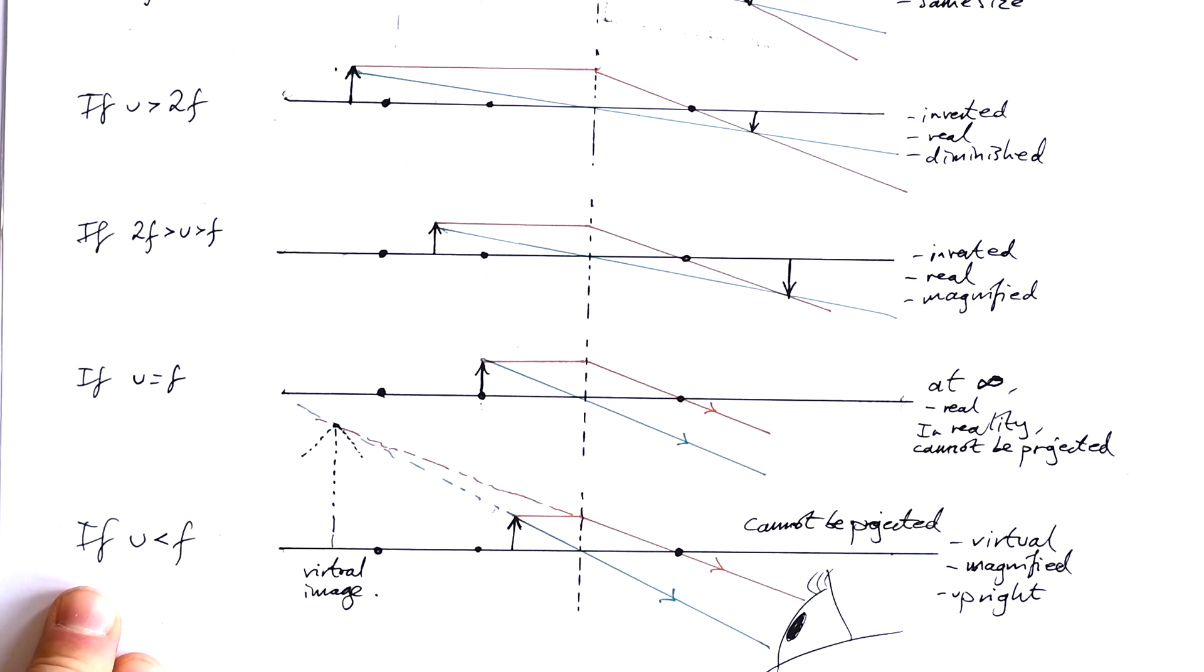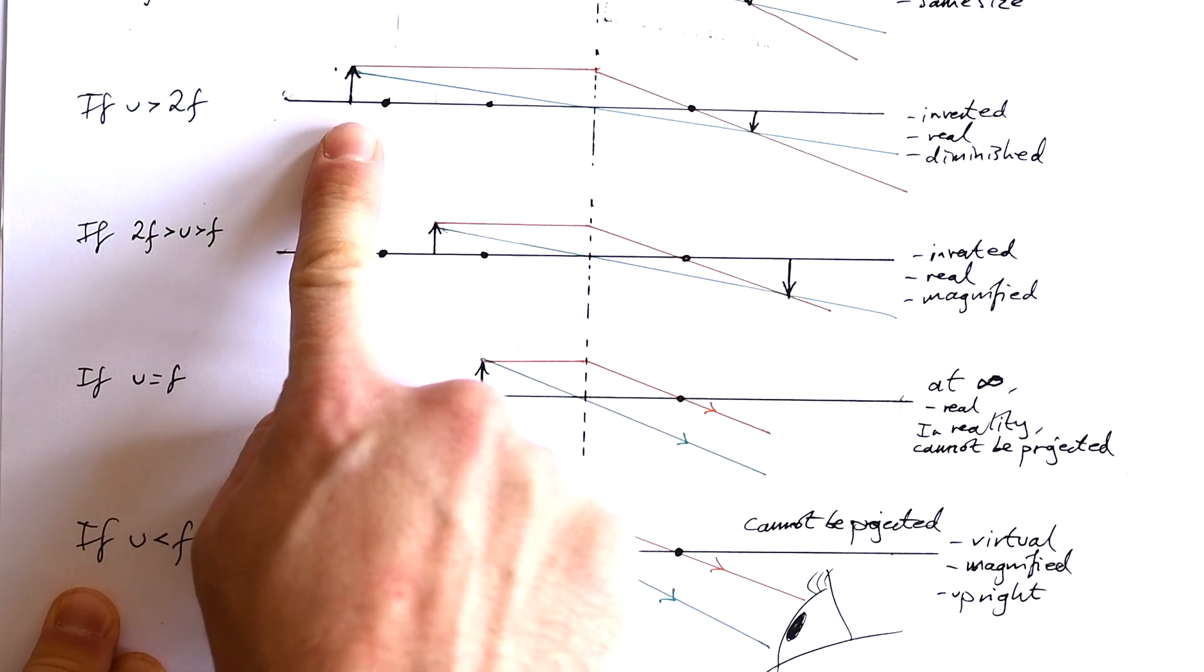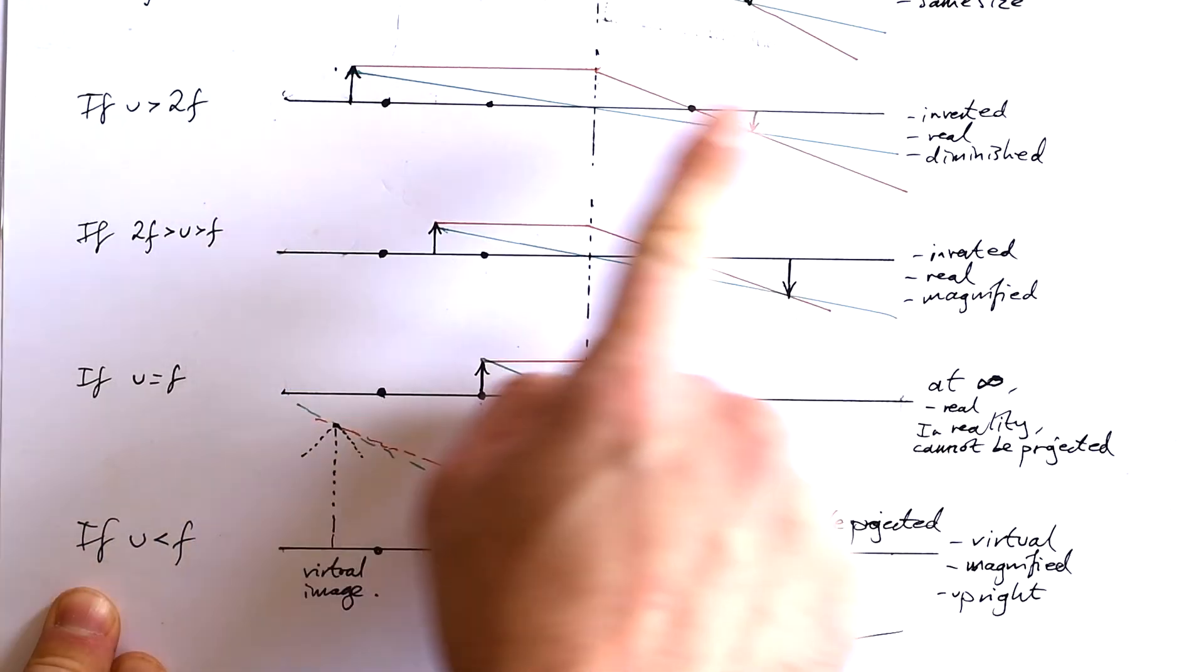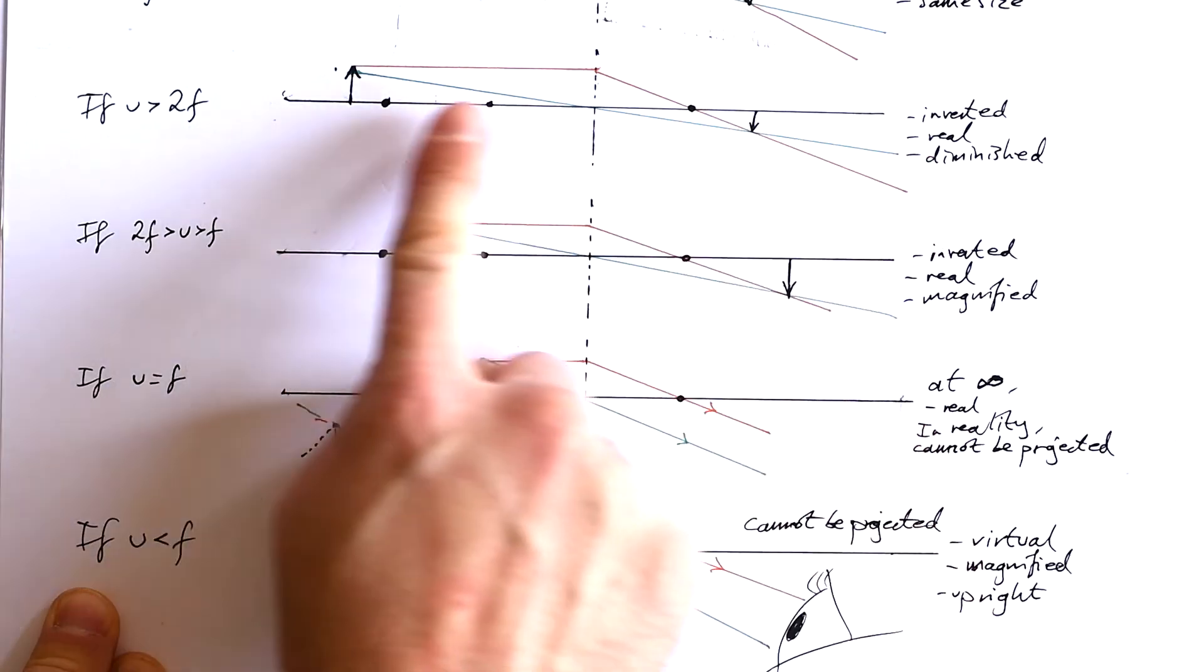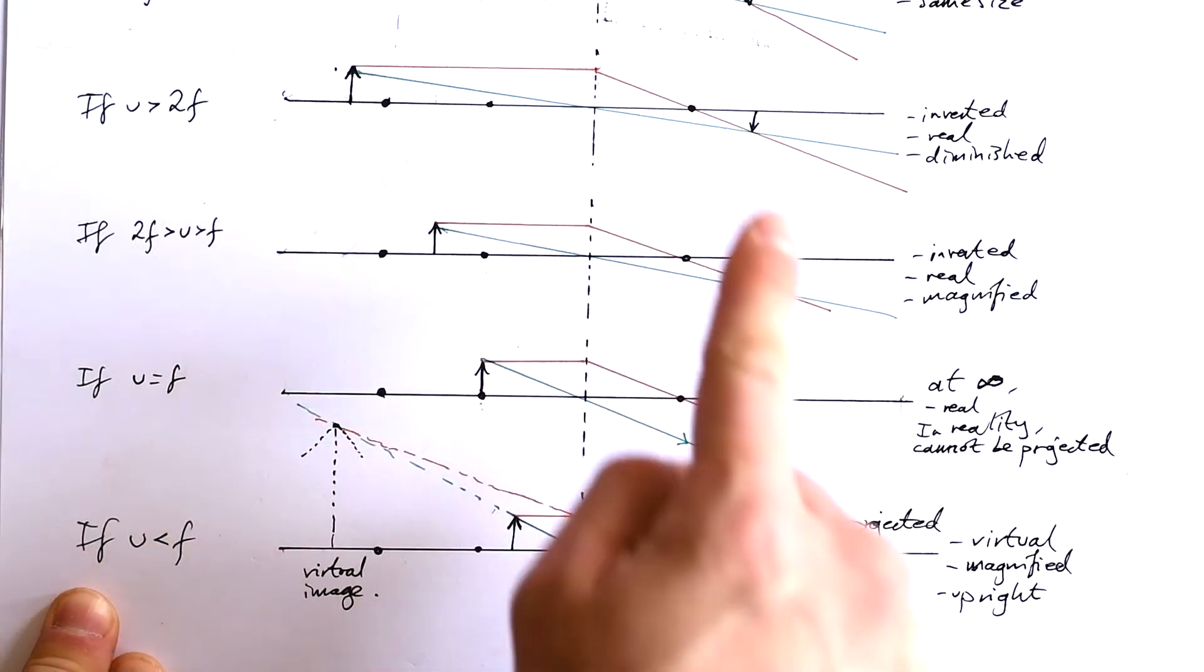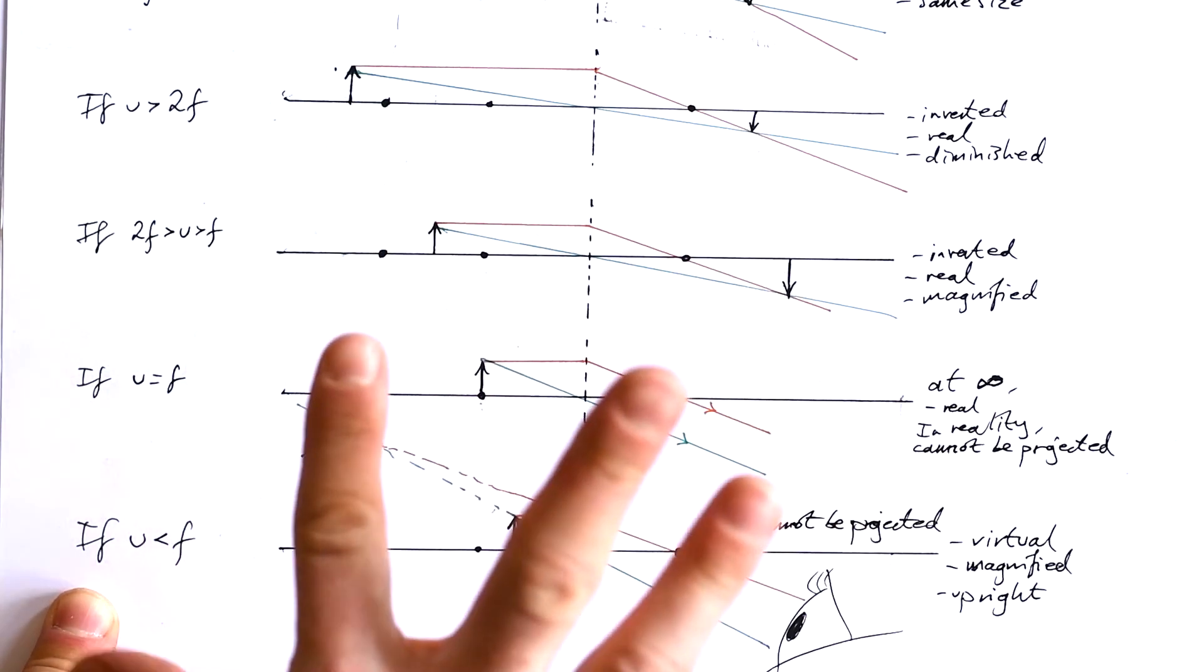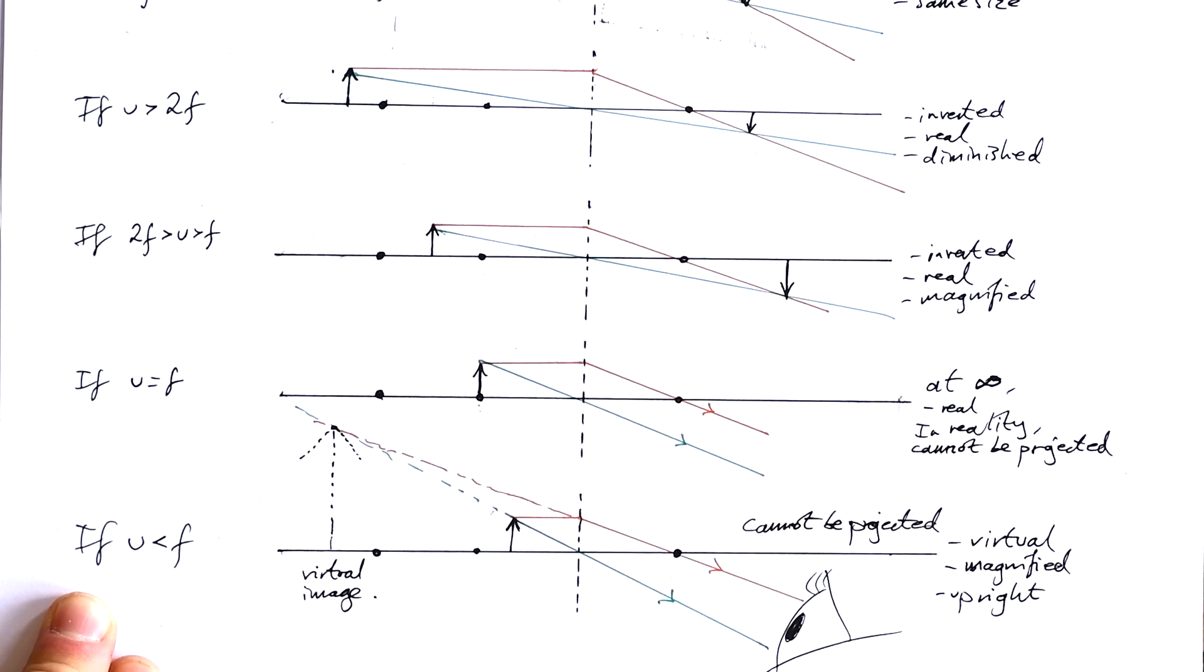That's why if you have an object very far from a lens, it'll look upside down and small. As you move it closer, it'll get bigger until we hit this point where it flips and you can't see anything. Then if you move it even closer, the object seems to be the right way up and magnified.